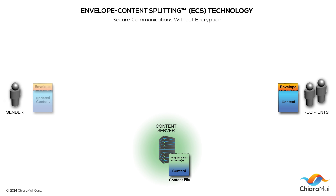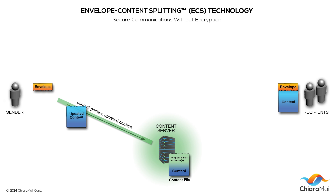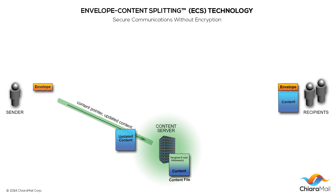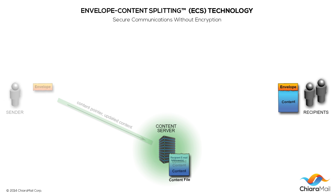If the sender wishes to change the content of the email just sent, they simply select the message, edit the content, and click update. The mail client sends an update request along with the corresponding content pointer contained in the original message and the edited content to the content server. The server replaces the content of the original message with the edited content.